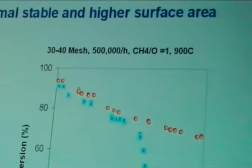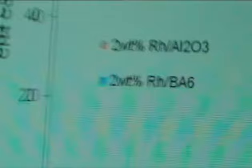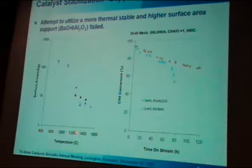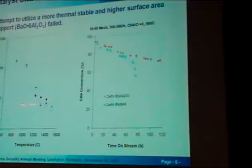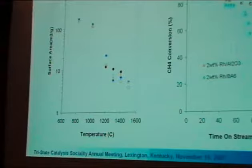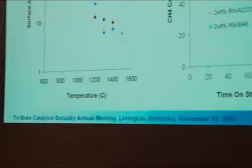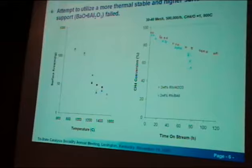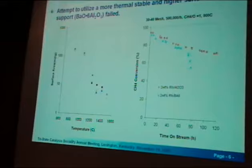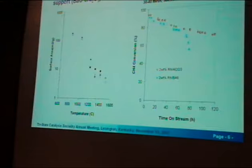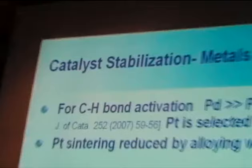We focused on the catalyst support. One kind of support we tried is barium hexaaluminate — a very high temperature-resistant ceramic material that can withstand very high temperatures. For example, even after treatment at 1,400 degrees Celsius, the surface area still stays close to 10 square meters per gram, whereas alumina collapses in that range. Unfortunately, it doesn't work. We tried many other supports — none worked. We still think alumina is a good catalyst support. And from this point on, we focused on changing metals.